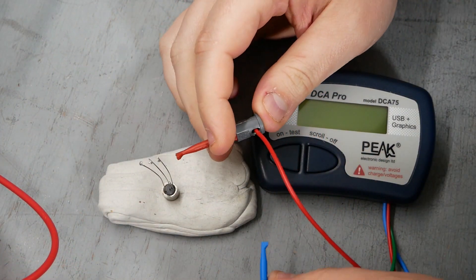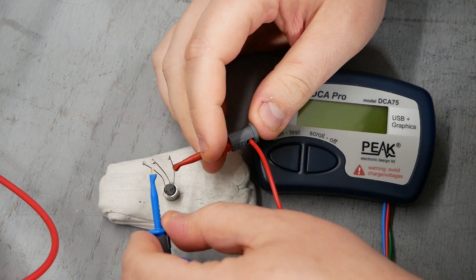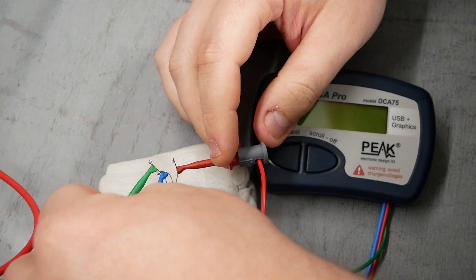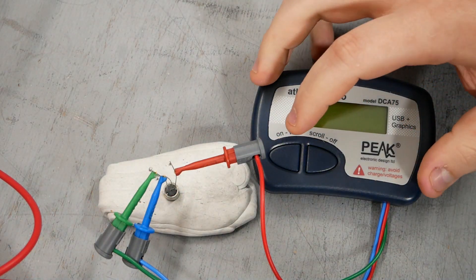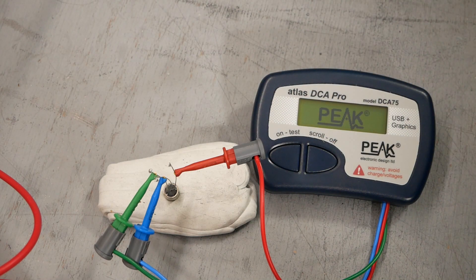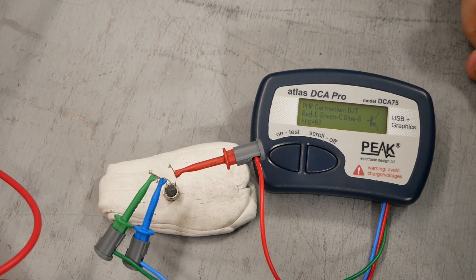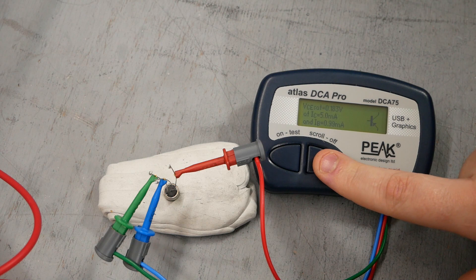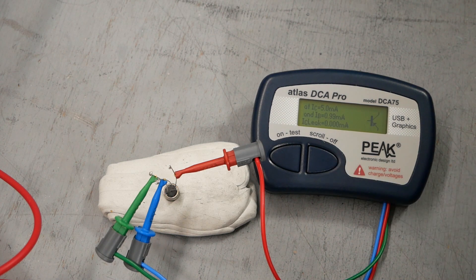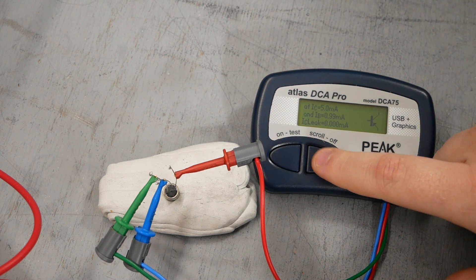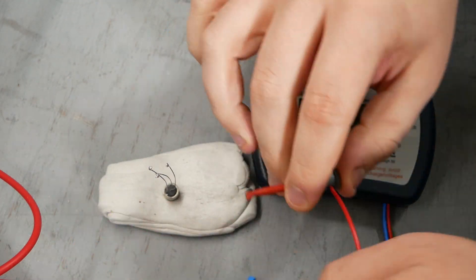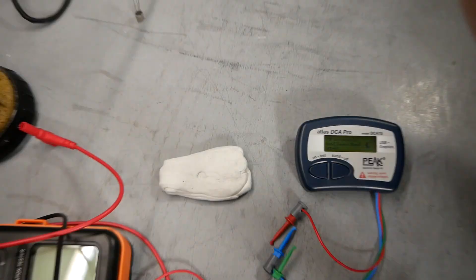Here's the peak DCA75 again attached to our leads. All right, let's see what happens. Yeah, so there you go. It's testing as a transistor now. Zero milliamps of leakage, which is good for germanium. Zero microamps actually. So that appears to have been a successful operation.